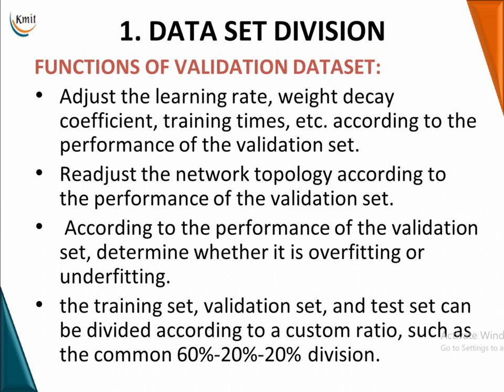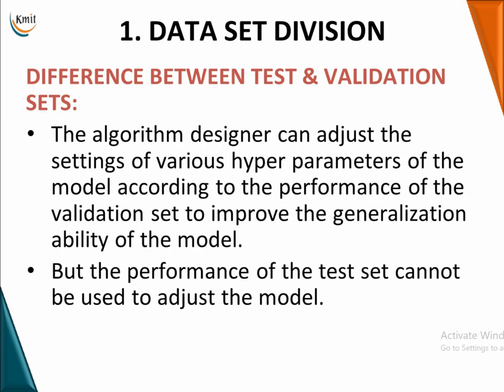If your model is overfitting, you can change the number of layers accordingly and readjust your network topology according to the performance of the validation dataset. You can determine whether your model is overfitted or underfitted. The customary ratio of training to validation to test is 62:20:20.